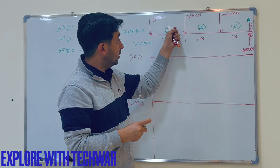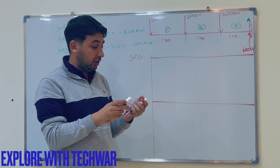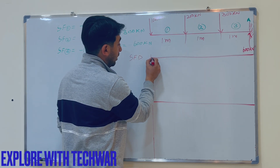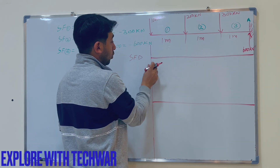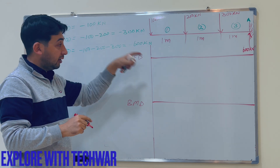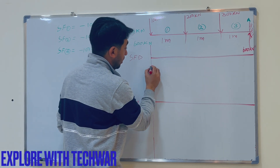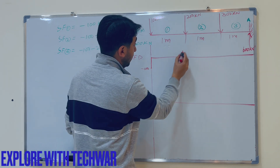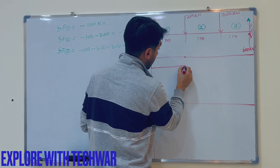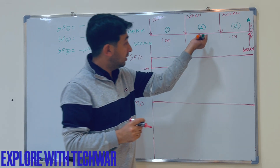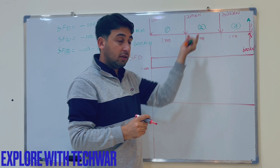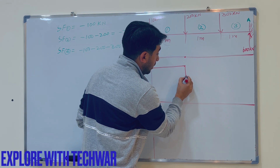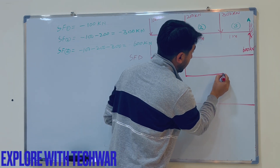Now we will draw the shear force diagram. Starting from the free end, the shear force is minus 100 kilonewtons, so we go below the zero line. This minus 100 acts straight until the next load point. At section 2, the shear force drops to minus 300 kilonewtons, and we draw a straight horizontal line to that point.